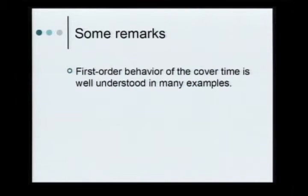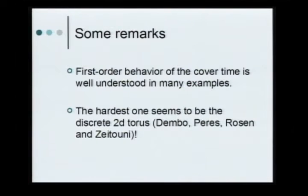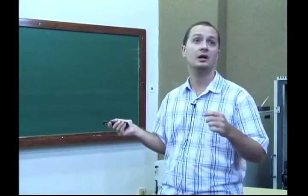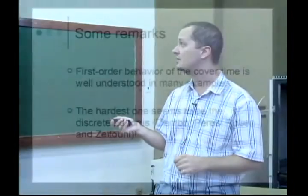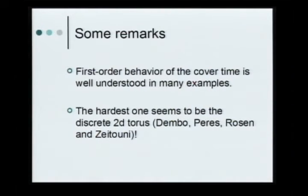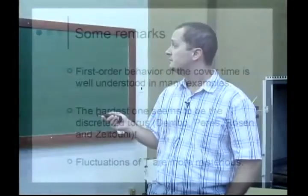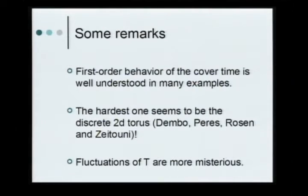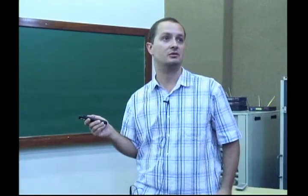The first-order behavior — the laws of large numbers for cover times — are well understood. Interestingly, in terms of first-order behavior, the cover time on the 2D torus turns out to be the hardest example in which you can compute the asymptotics of the expected value. Already in three dimensions, things change a lot. The fluctuations of the cover time are much less understood than the expectation. They're known in graphs like the hypercube and in the 3D torus, but most results on the fluctuations are done on an example-by-example basis. Up to our result, there was no general theorem telling you: under these conditions, you get this behavior on the fluctuations of the cover time.